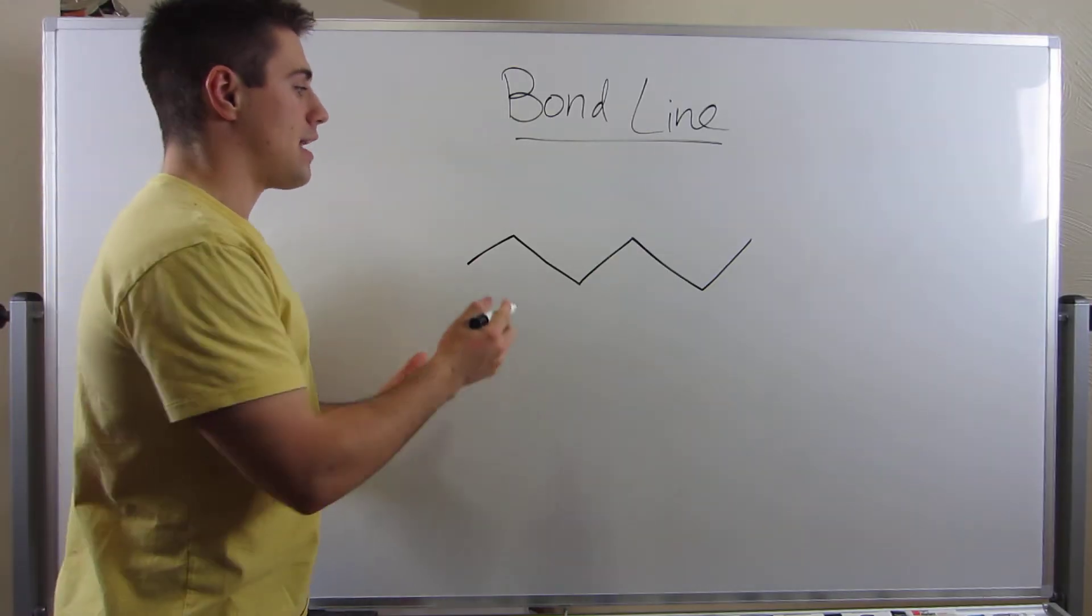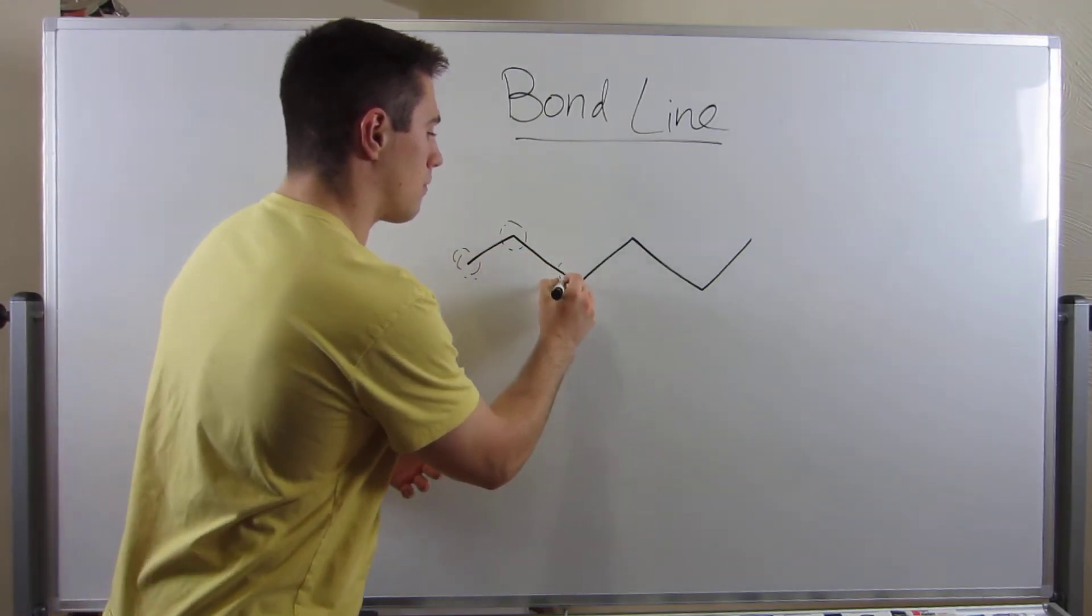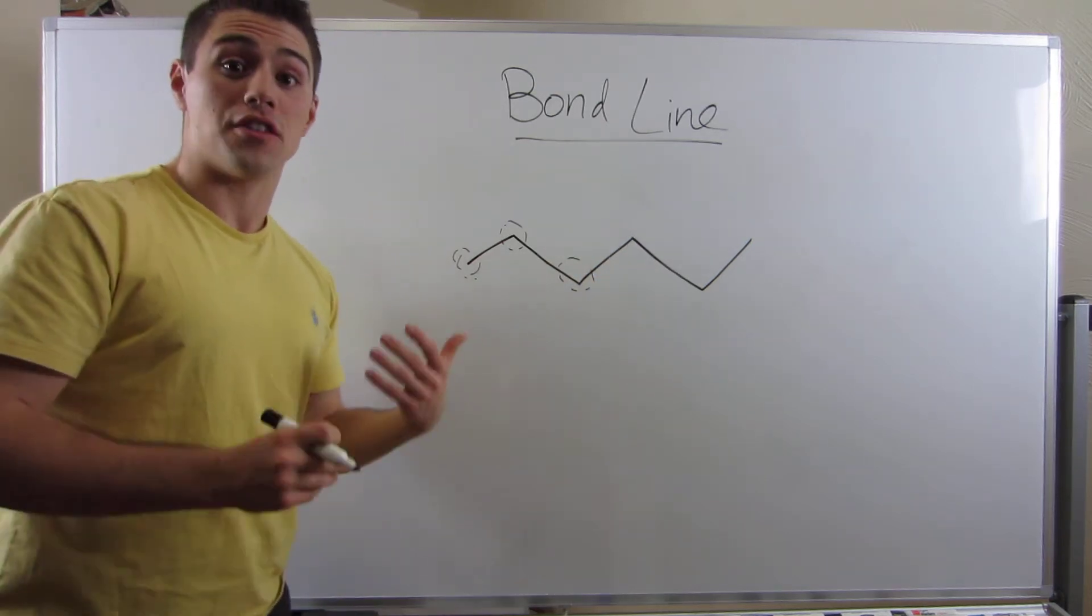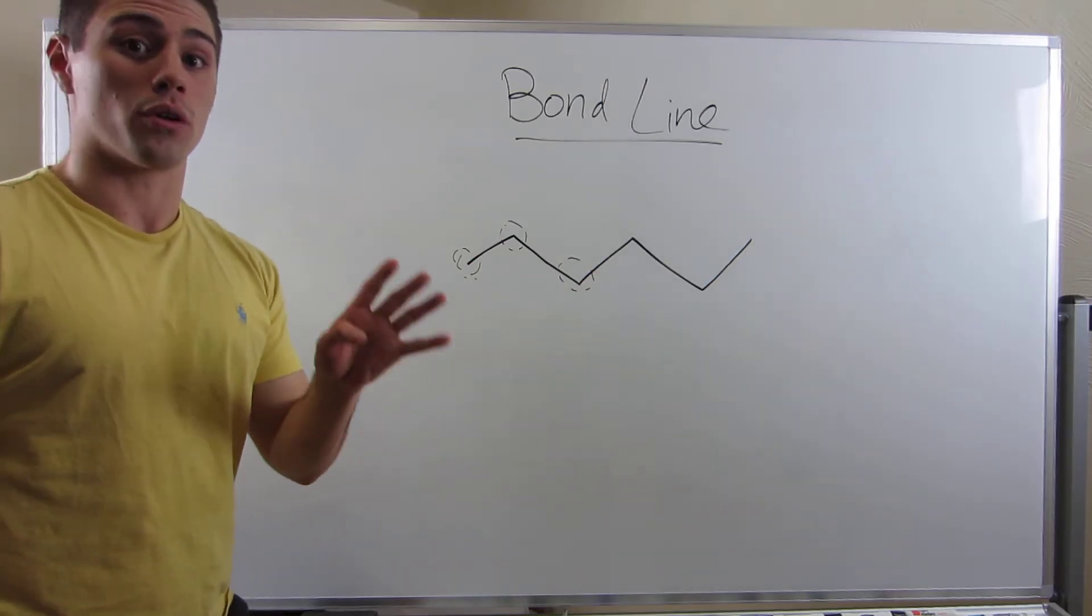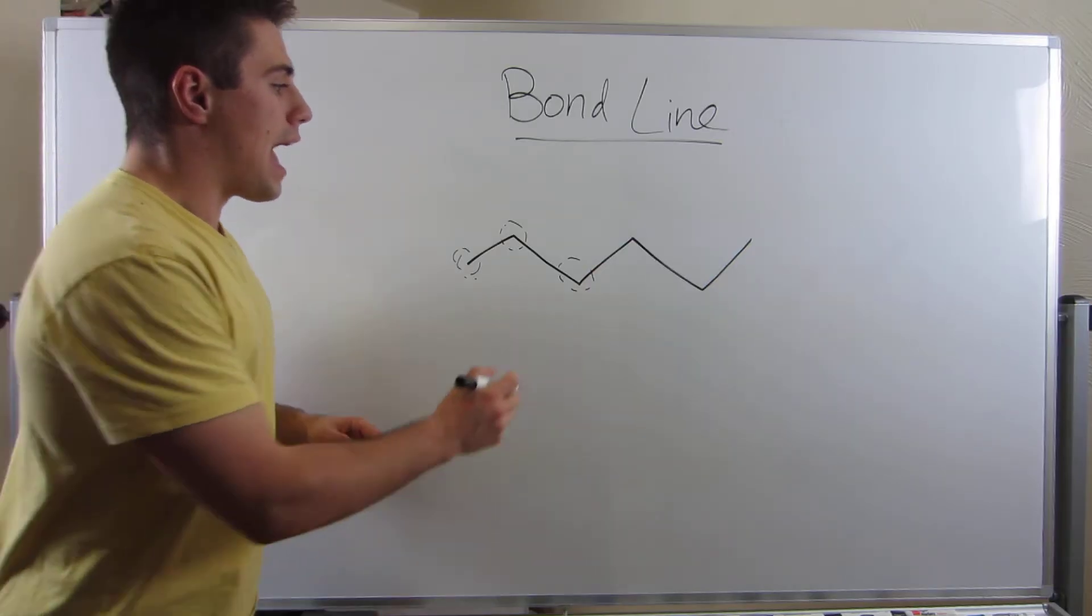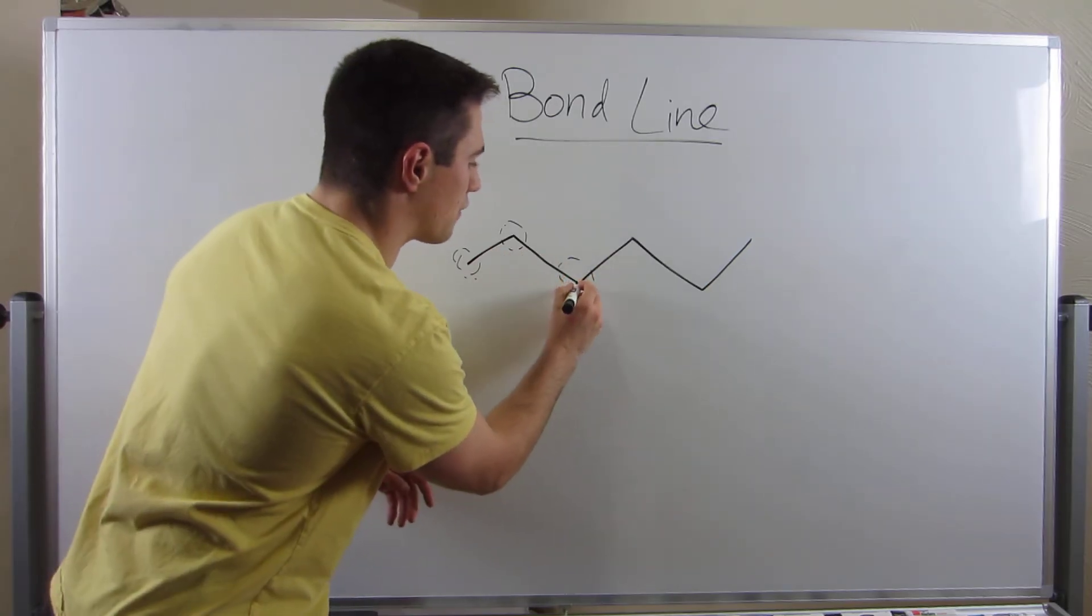Okay, so in bond line, every juncture like that signifies a carbon. So it's understood that every carbon has four bonds, right? So at each juncture, you can count the carbon carbon bond. So let's take this guy, for example.